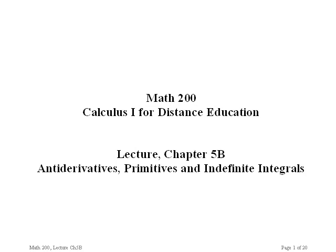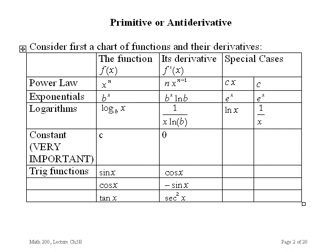This is lecture 5b for Calculus 1 on antiderivatives and primitives. The idea is that you are given the derivative of some function, and you want to find what that function is. The name of that function is the primitive, or sometimes it's called the antiderivative.